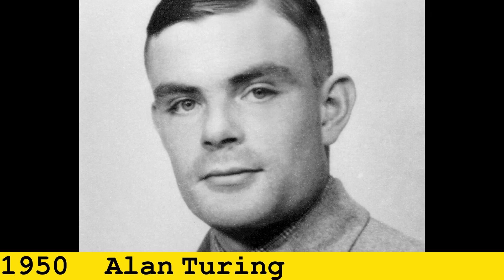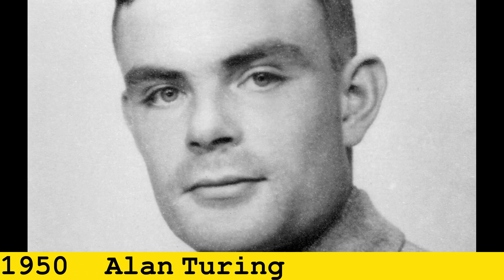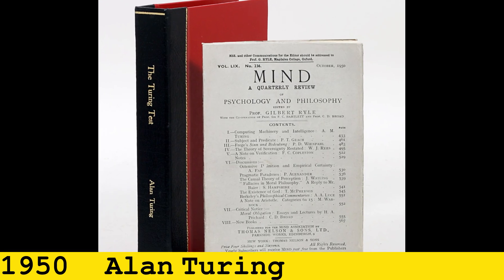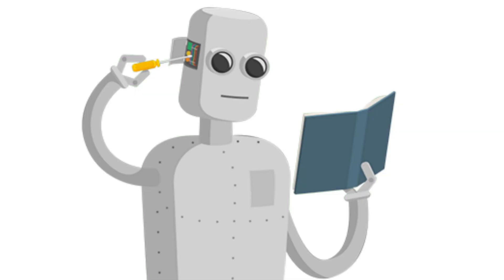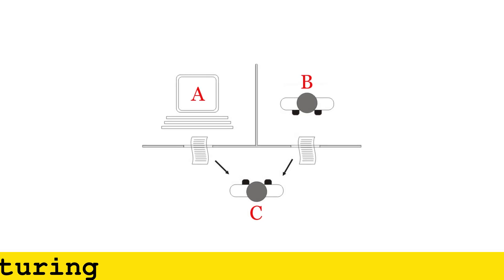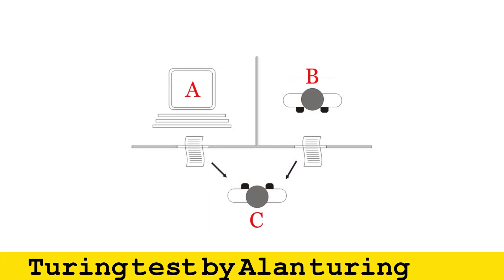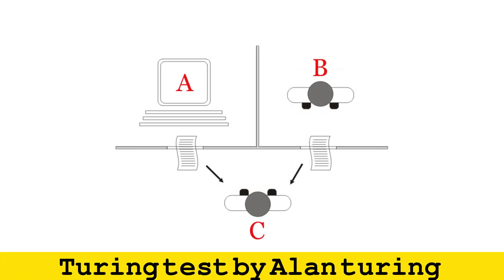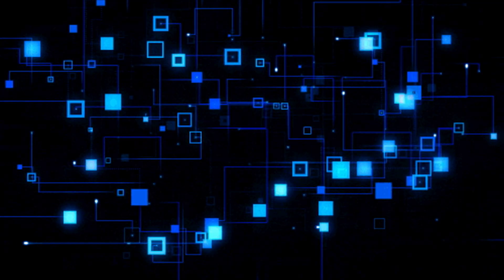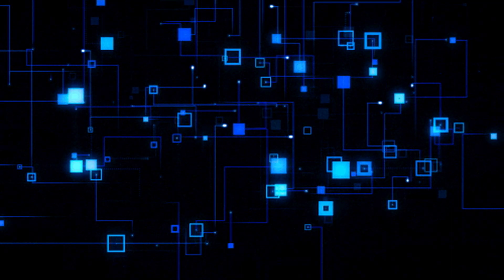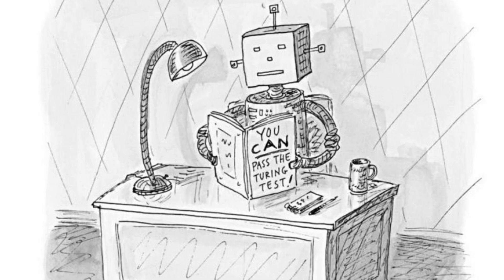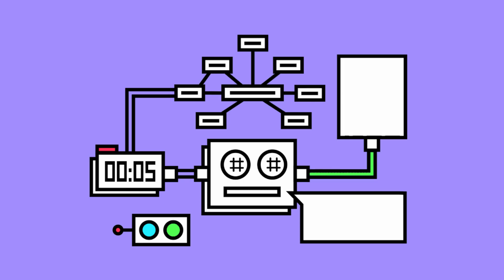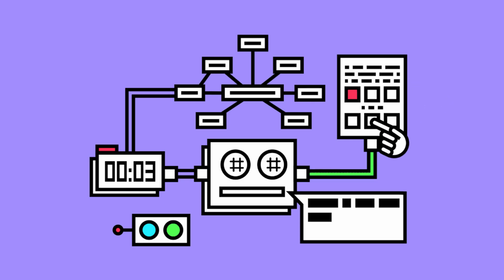In 1950, Alan Turing, a brilliant mathematician, published a paper in which he speculated about the possibility of creating a machine that can think. He created what is known as the Turing test, which is basically used to determine whether or not a computer can think intelligently like a human. Unfortunately, up to this date we haven't found a machine that can fully clear the Turing test.